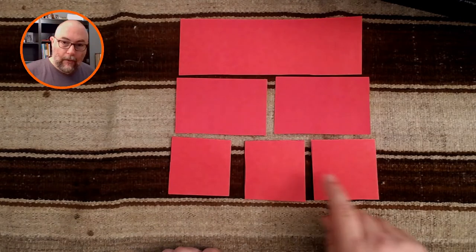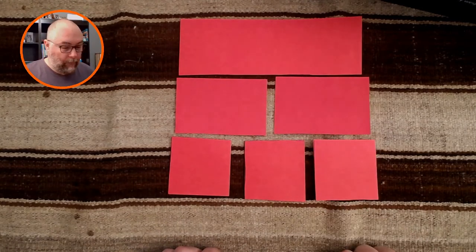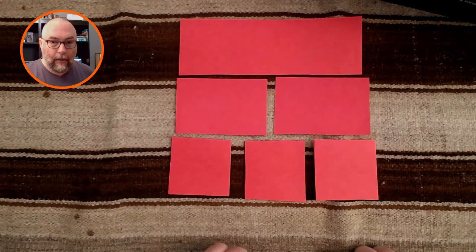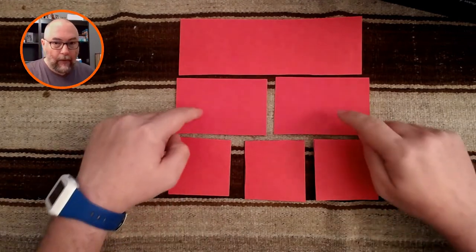Notice how these three pieces are the same size. That's because they're equal. These two pieces are the same size. That's because these two pieces are equal.